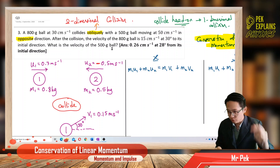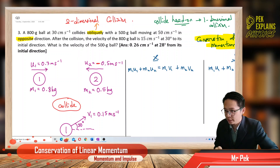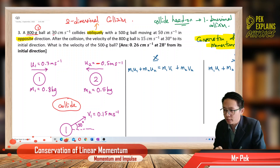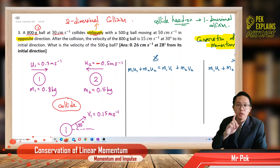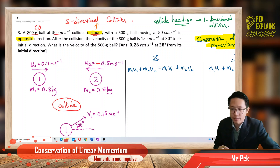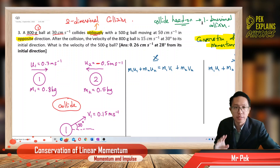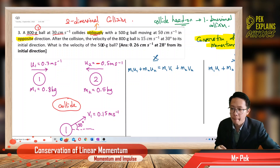Let us highlight the information. We have the mass of the first ball, the 800-gram, we denote as 1, and we have also the initial velocity. The word oblique — oblique collision means two-dimensional collision. But if the collision is head-on, it is a one-dimensional collision. So the word oblique means two-dimension.